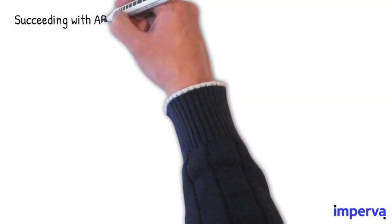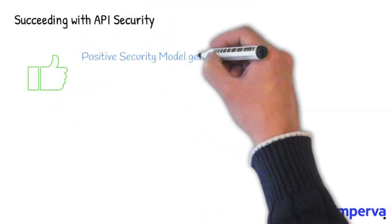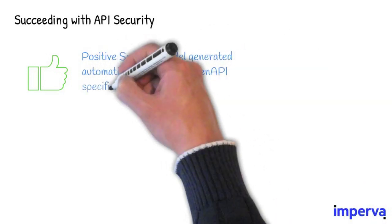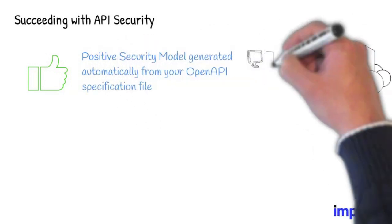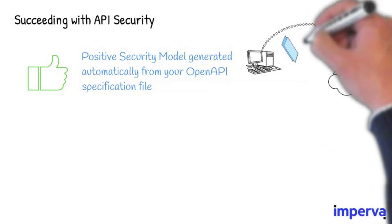Imperva gets ahead of these challenges and enables you to succeed with API security. Whenever you create your API using the OpenAPI specification, originally known as a swagger file, Imperva's API security will automatically generate a positive security model on your behalf based on your file documentation.